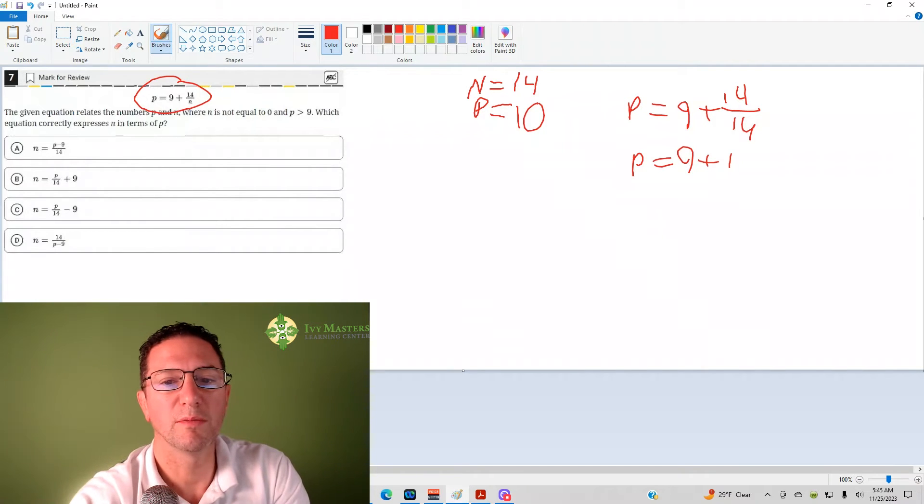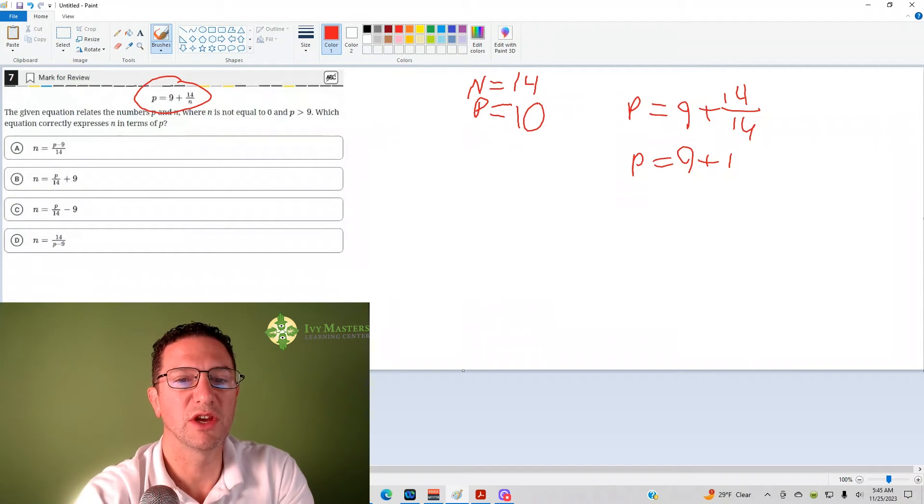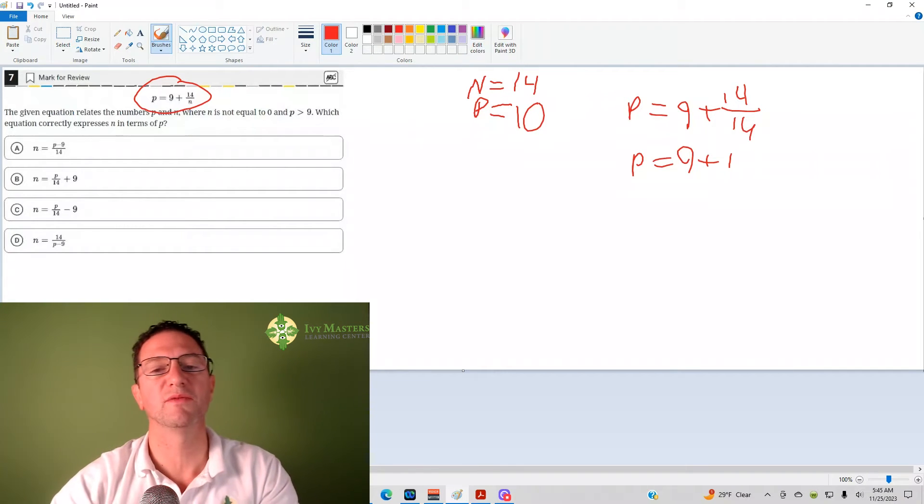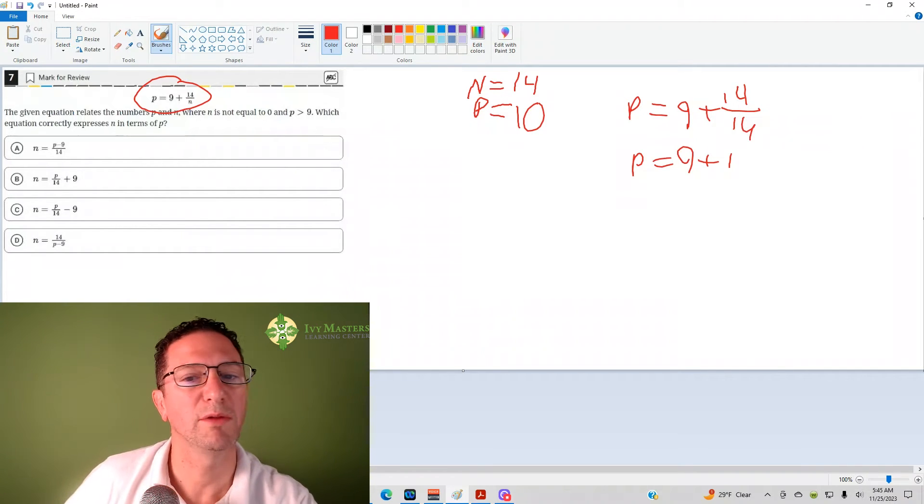Now I'm going to plug 10 in for p into each answer choice and eliminate anything that doesn't give me 14 for n. If I plug 10 in for p into answer choice A, I get 10 minus 9, which is 1 over 14. n is not 1 over 14, I need n to be 14.